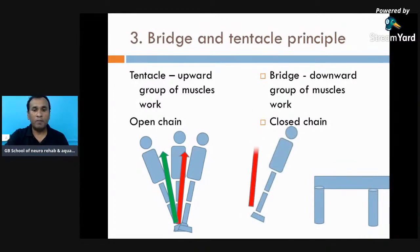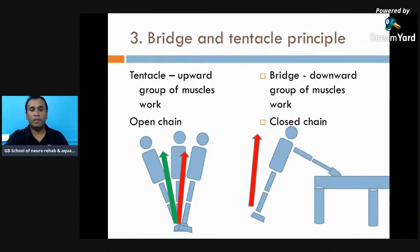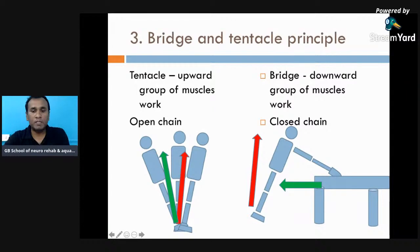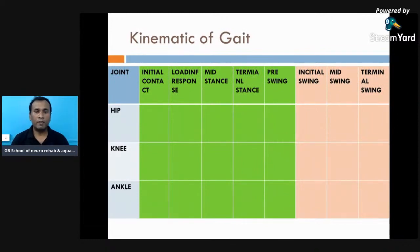For the bridge principle: once you move forward and touch a surface, you form a bridge — a closed chain. The moment a bridge is formed, muscle action changes — suddenly the flexor group, or the downward group of muscles, starts working instead of the extensors. So whenever there is a bridge, the downward group works; whenever there is open chain like a tentacle, the upper group works. This concept is from Patricia Davis in her book 'Right in the Middle.'